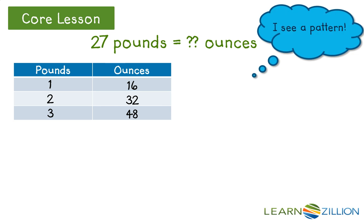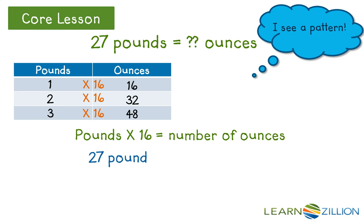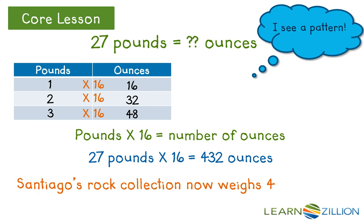I see a pattern, so I'm going to stop here and use the pattern to my advantage. I see that for every pound, they're adding an additional 16. So I can actually do number of pounds times 16 to give me the number of ounces. So I'm going to go ahead and plug in my 27 times 16 to get an answer of 432 ounces. So my final answer is Santiago's rock collection now weighs 432 ounces.